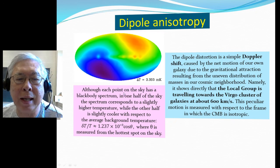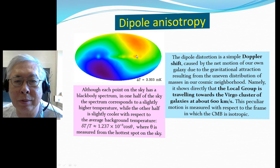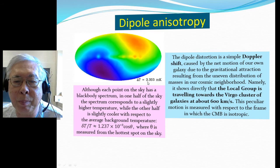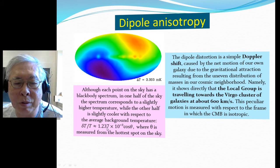Although each point on the sky has a black body spectrum, one half of the sky shows a spectrum corresponding to a slightly higher temperature, while the other half is slightly cooler with respect to the average background temperature. The hottest part to the coldest part differs by about 3.35 millikelvin. This difference divided by 2.27 Kelvin comes out to be about one part in a thousand times cosine theta, where theta is measured from the hottest spot to the coldest.